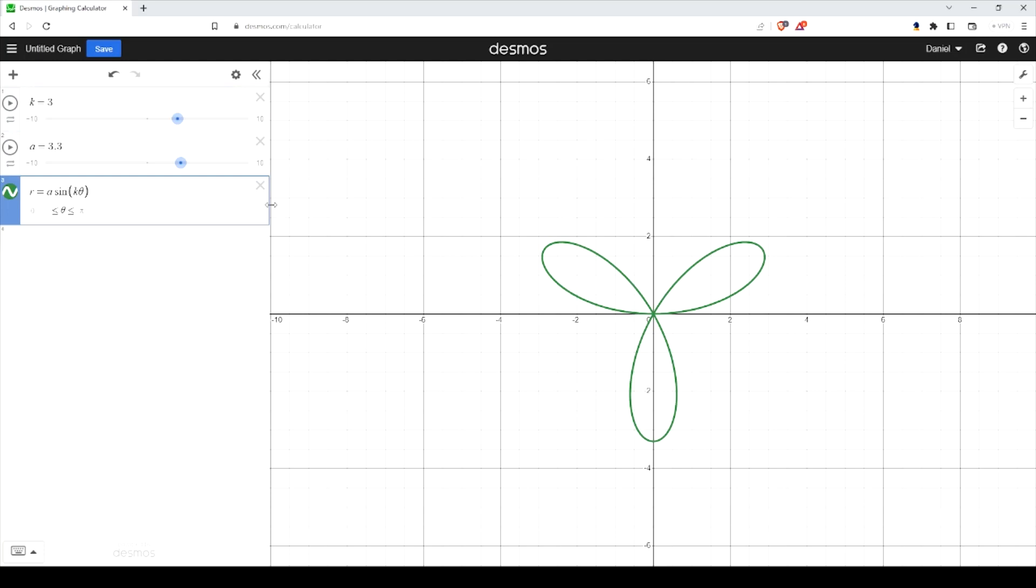And the simplest way of doing this is to start with this parametric equation: cosine of t, sine of t. And for the domain, we want for this to be from 0 to 2 pi.